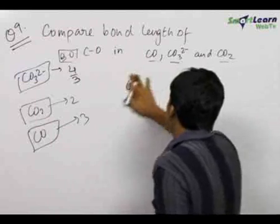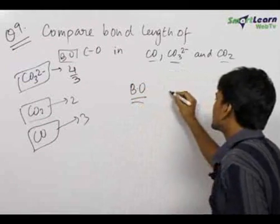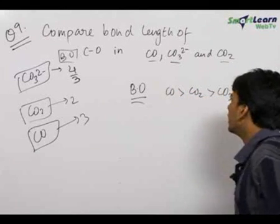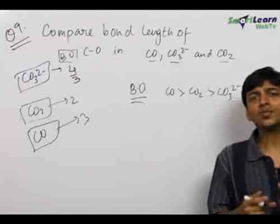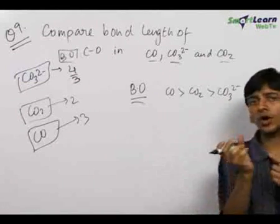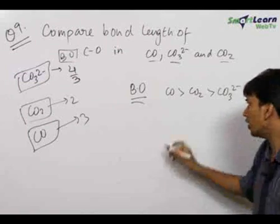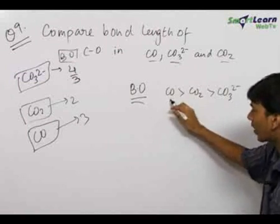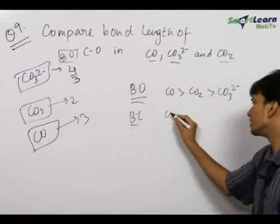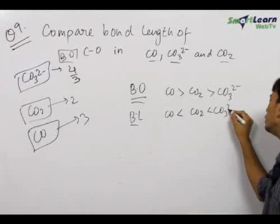Therefore we can arrange bond order as: CO > CO₂ > CO₃²⁻. Now we know that greater the bond order, lesser is the bond length — that is, a triple bond is shorter than a double bond, and a double bond is shorter than a single bond. Therefore, since the bond order of carbon monoxide is the greatest, the bond length order will be completely reverse: CO < CO₂ < CO₃²⁻.